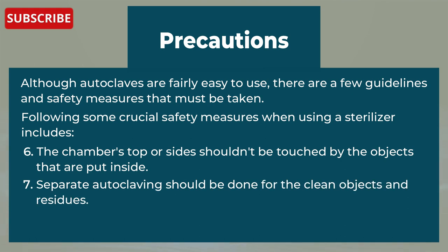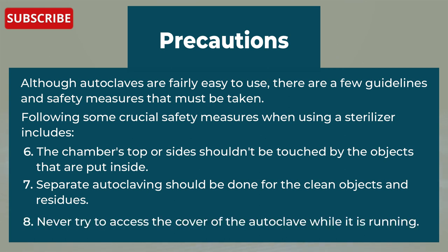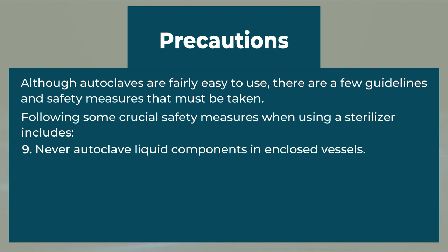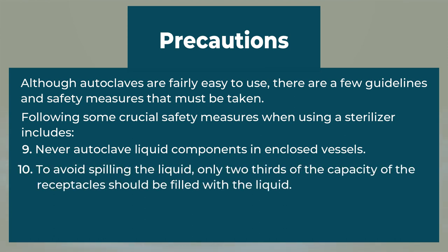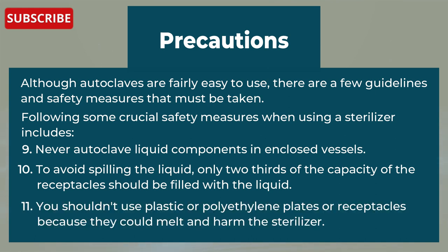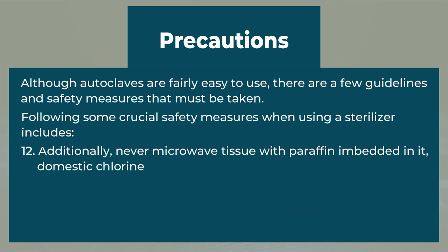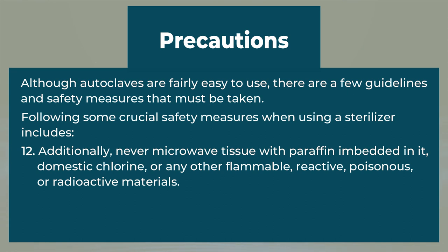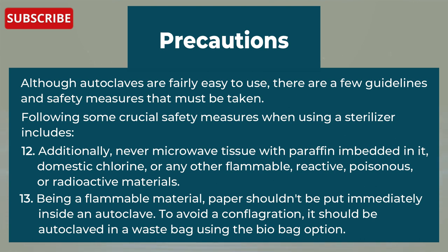Seventh, separate autoclaving should be done for clean objects and residues. Eighth, never try to open the cover of the autoclave while it is running. Ninth, never autoclave liquid components in enclosed vessels. Tenth, to avoid spilling, only two-thirds of the capacity of receptacles should be filled with liquid. Eleventh, do not use plastic or polyethylene plates or receptacles because they could melt and harm the sterilizer. Twelfth, never microwave tissue with parafilm embedded in it, domestic chlorine, or any other flammable, reactive, poisonous, or radioactive materials. Thirteenth, paper shouldn't be put directly inside an autoclave — being a flammable material, it should be autoclaved in a waste bag using a bio-bag option.